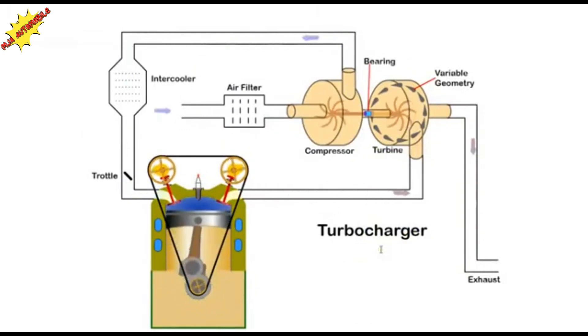A turbocharger uses the energy in the waste gases exiting from the cylinder to spin a turbine which drives a compressor mounted on the same shaft. The compressor draws clean air in through a filter and compresses it.